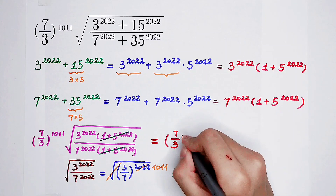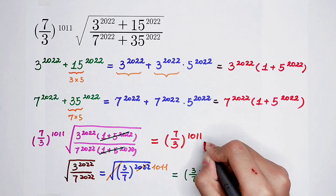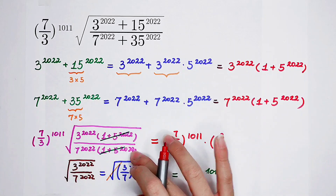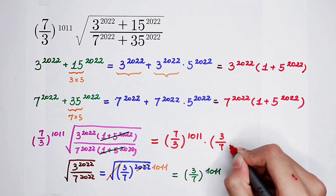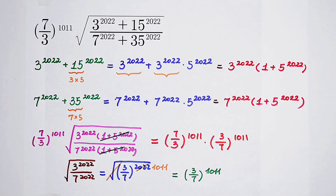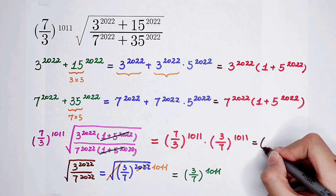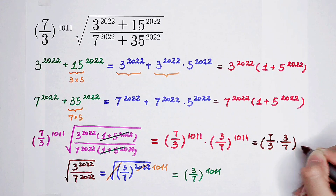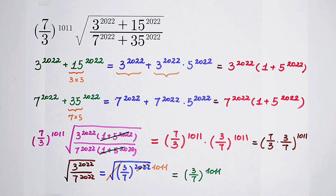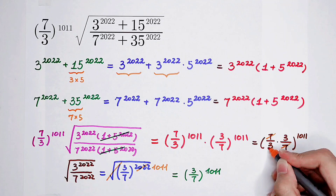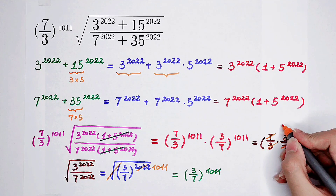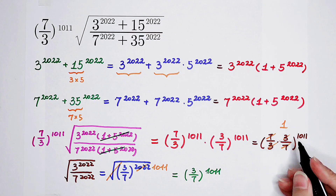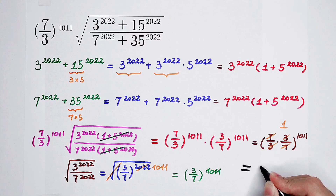7 over 3 to the power of 1011, and then times 3 over 7 to the power of 1011. It is equal to 7 over 3 times 3 over 7, all to the power of 1011. You know, 7 and 7 cancel, 3 and 3 cancel. So what's in the bracket? It's 1. So the final answer is 1 to the power of 1011. That is, 1.